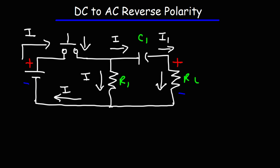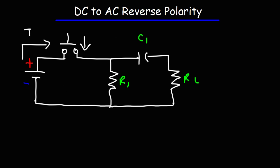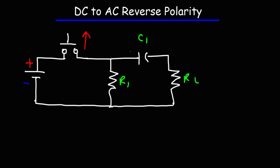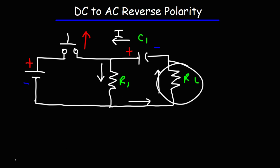When the switch is closed, C1 is being charged by the battery. Now let's see what happens when the switch is open. Once we open the switch, current will no longer be able to flow from the battery. The capacitor has now been charged, so it has a voltage across it. Once the switch is open, the capacitor begins to discharge through R1, and that current will flow through the load resistor. Now the bottom part of the load resistor is positive and the top part is negative — the direction of the current has reversed. It is this reversal of current that we're interested in.